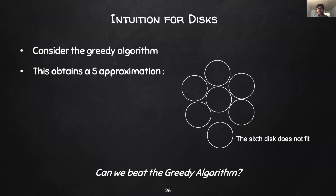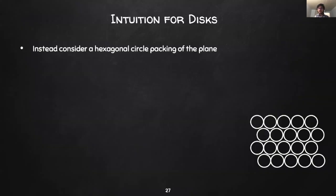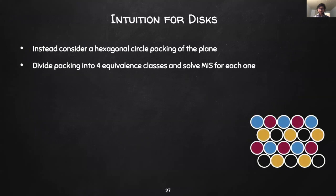The question then is, can we get a turnstile stream algorithm that potentially beats the greedy approximation ratio? So instead, we consider a hexagonal packing of the plane as seen here. We partition the packing into 4 equivalence classes as follows. Observe that any pair of disks that lie in the same equivalence class must be disjoint.